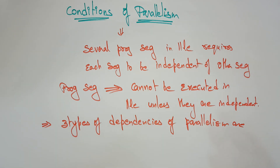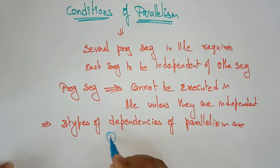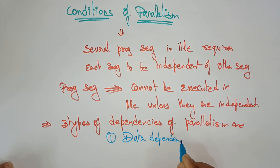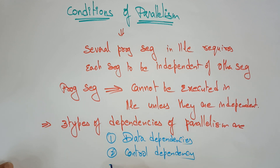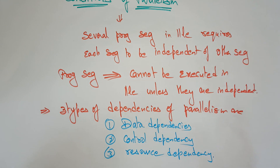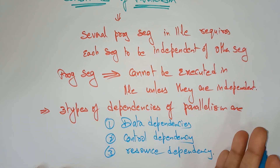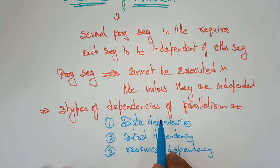If they are independent, there is no concept of searching for what the other segment is doing or whether it is required. Independence comes in several forms. But the concept here is, when talking about the conditions in parallelism, we have to concentrate on dependency of parallelism. There are three different types of dependencies: data dependency, control dependency, and resource dependency.